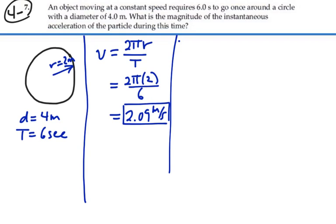The centripetal acceleration is equal to its velocity squared divided by the radius of its curvature. So that's going to be equal to 2.09 meters per second squared divided by two meters.